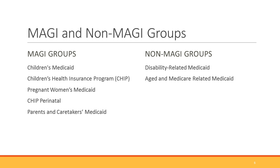There are still Medicaid groups where you do not use MAGI methodologies — their eligibility process did not change under the Affordable Care Act in general. Those are specifically disability-related Medicaid and aged and Medicare-related Medicaid, often referred to as Medicaid for the Elderly and People with Disabilities, or MEPD. We will discuss that briefly in the next slide, but in general we're focused on the MAGI groups.